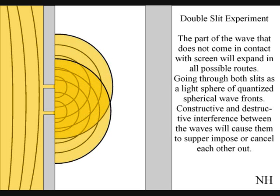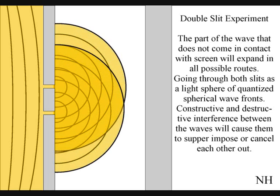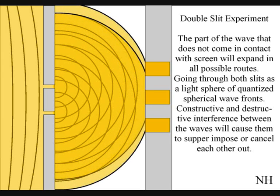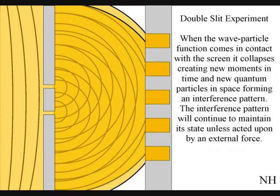Constructive and destructive interference between the waves will cause them to superimpose or cancel each other out. When this wave particle function comes in contact with the screen, it will collapse, creating moments of time and quantum particles in the shape of an interference pattern.